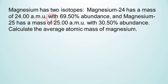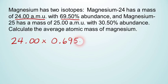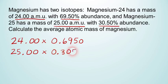So, we're going to start by taking the mass, 24.00 atomic mass units. And we're going to multiply that by the percentage that that isotope represents. So, it says it's 69.50% abundance. So, that would be 0.6950. And we're going to do the same thing for the other isotope. It has a mass of 25.00 atomic mass units. And we're going to multiply that by its percentage abundance, 30.50%, which is 0.3050.